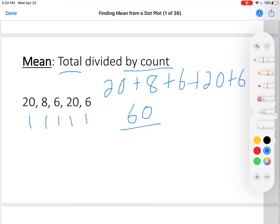Now I have to divide that by the count. How many are there? There's 1, 2, 3, 4, 5. 60 divided by 5 is 12. I ate 12 cookies per day.